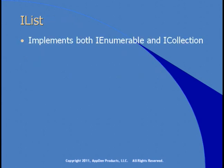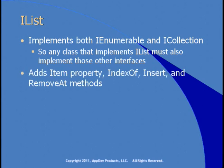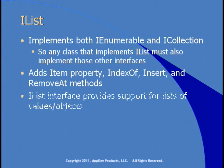The IList interface implements both IEnumerable and ICollection, so any class that implements IList must also implement those other interfaces. This adds an item property so you can retrieve any specific item, indexOf to tell where an item is, insert to insert at any location within the collection, and removeAt to remove an item at a specific location. IList provides support for lists of values and objects.